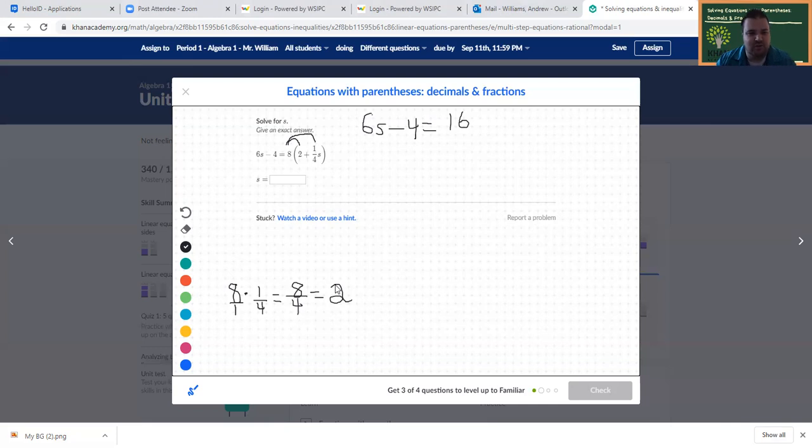Another way of doing this, which you may see teachers do or talk about, is if we're doing 8 times 1 fourth, this is the same thing as saying 8 times 1 divided by 4. And the order of operations with multiplication or division, if that's all you're doing, we have the commutative property, meaning you can do things in any order you want, because multiplication and division, they're all on the same level. So we could do 8 divided by 4 first. 8 divided by 4 is 2, and then 2 times 1 is 2. That's something you may see teachers talk about.